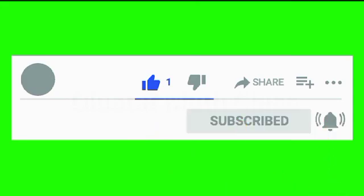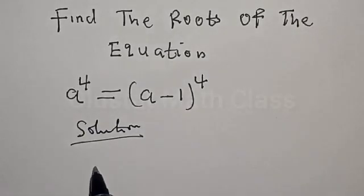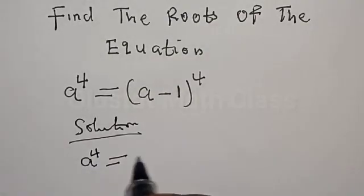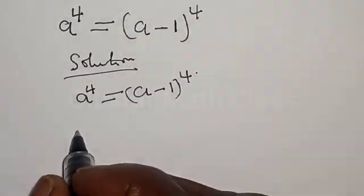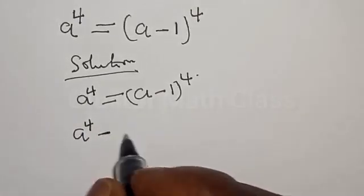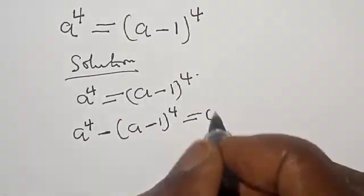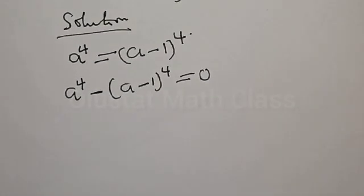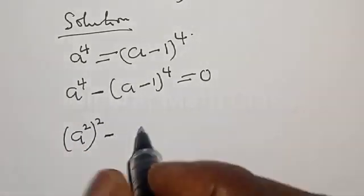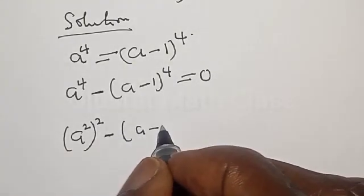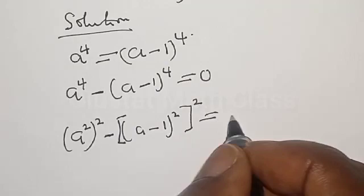Solution: we have a raised to power 4 equal to a minus 1 raised to power 4. Then we have a⁴ minus (a-1)⁴ equal to zero. Now remember, a⁴ can be expressed as (a²)² minus ((a-1)²)², all squared, equal to zero.